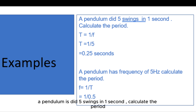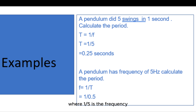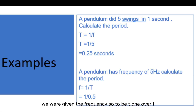Let's check this example: a pendulum does five swings in one second — calculate the period. The five swings represents the frequency. So T equals one over f, which is one over five. The period for this pendulum is 0.2 seconds.